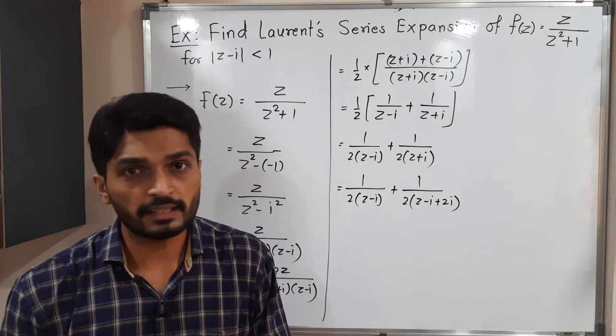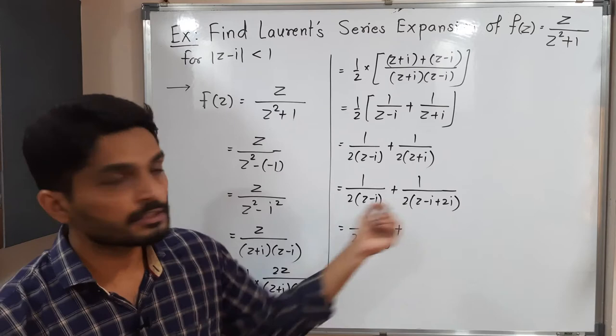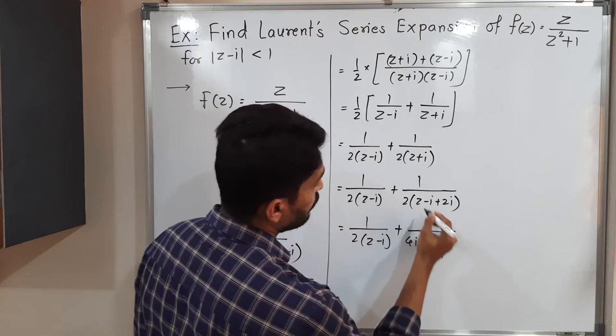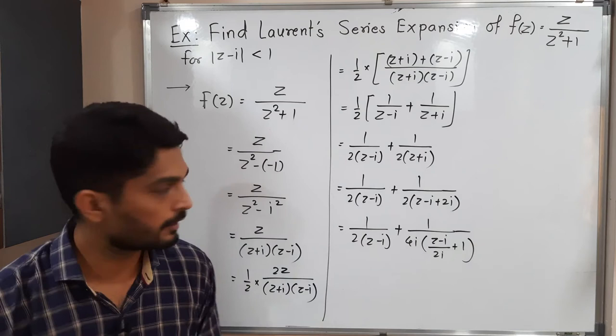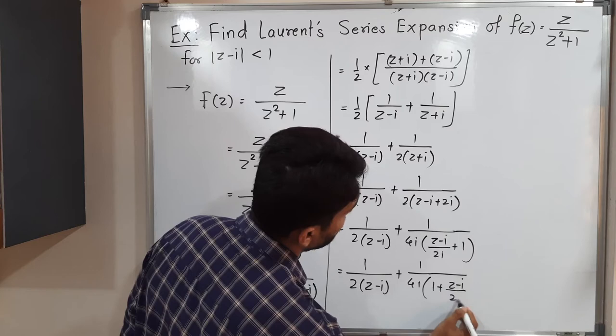So this equals 1/(2(z - i)) plus, taking 2i common from the denominator, 1/(4i) · 1/(1 + (z - i)/(2i)). Now we can find the series expansion of this second term using the geometric series formula.